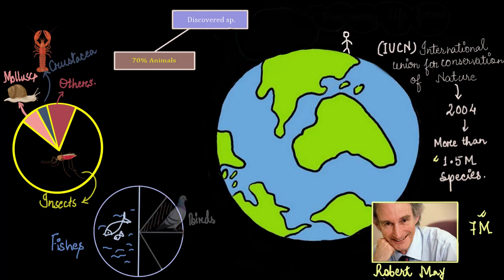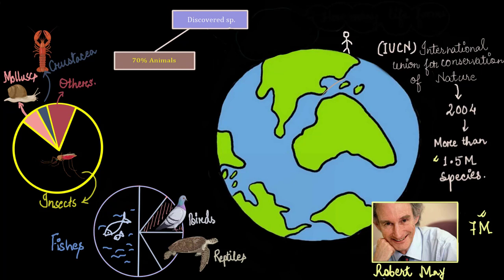After fishes, we have birds. There is a pigeon, for example. And reptiles. Here is a turtle. It is said that birds and reptiles got almost the same duration to evolve, and therefore it can be possible that they have almost similar number of varieties.